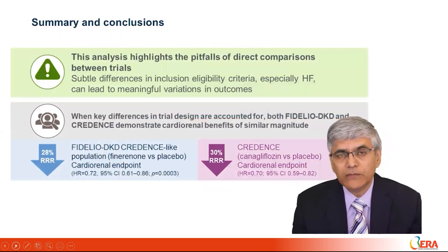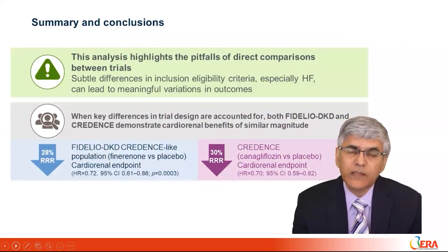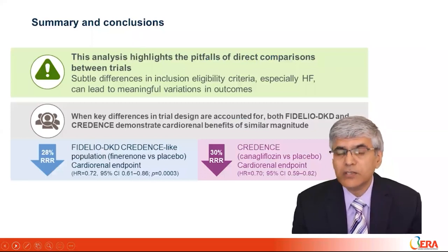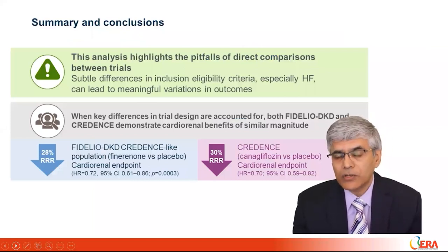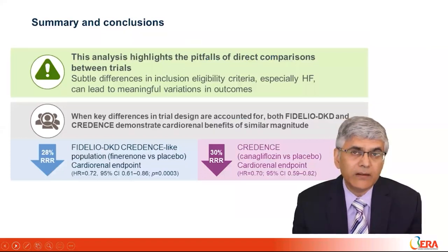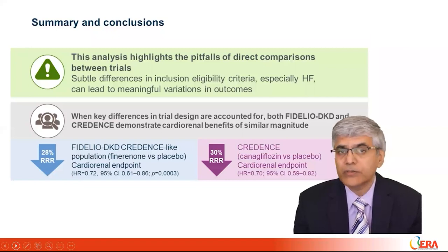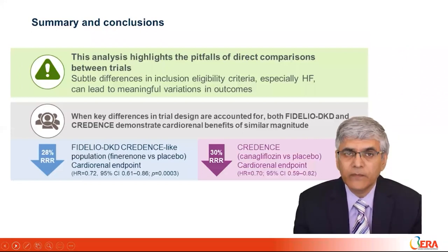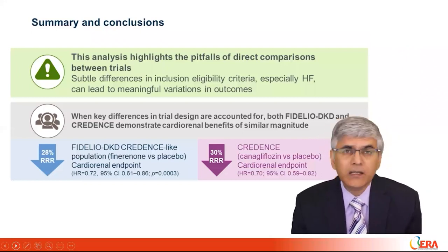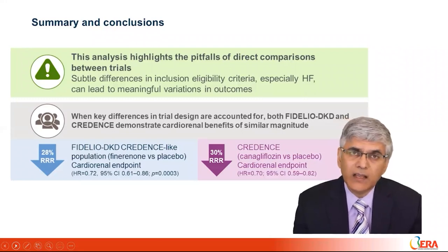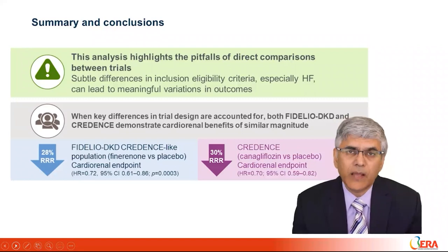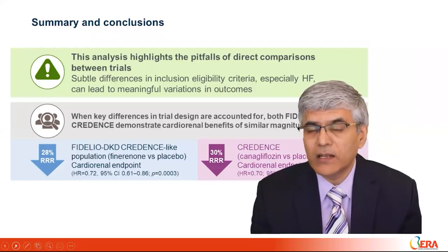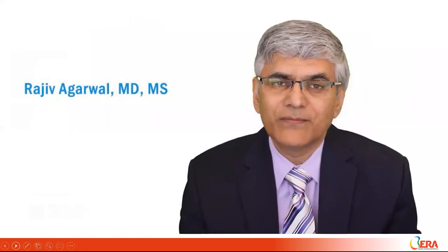In summary, this analysis highlights the pitfalls of direct comparisons between trials. Subtle differences in inclusion/exclusion criteria — especially heart failure — and outcome definitions lead to meaningful differences in outcomes. We cannot adjust for the higher eGFR studied in CREDENCE because patients with eGFR 75–90 were excluded from Fidelio-DKD. When key differences in trial design are accounted for, both Fidelio-DKD and CREDENCE demonstrate a cardiorenal benefit of similar magnitude: a relative risk reduction of 28% in Fidelio-DKD and 30% in CREDENCE. Thank you for your attention.